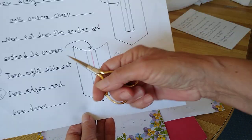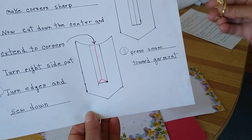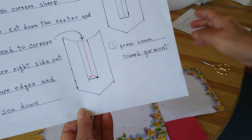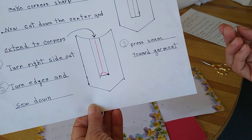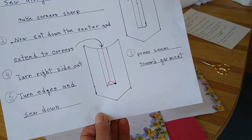If you have an embroidery scissor they're nice and sharp and can get these little corners precise. You're going to be turning it right side out and you're going to be turning the edges and sewing them down.